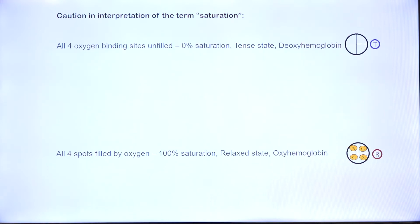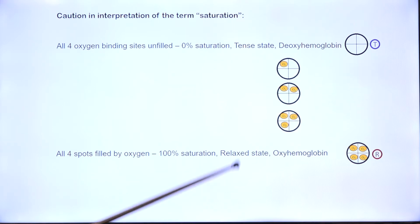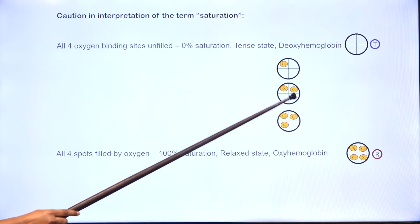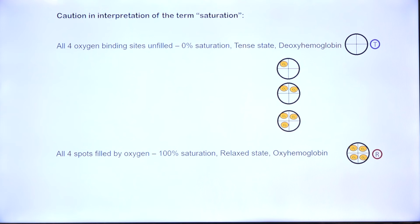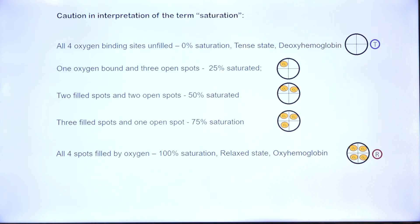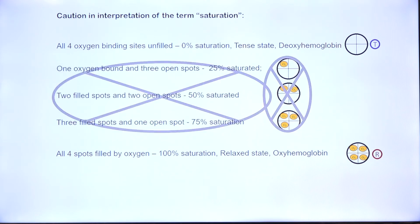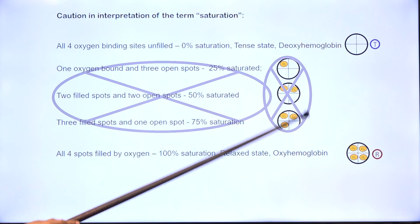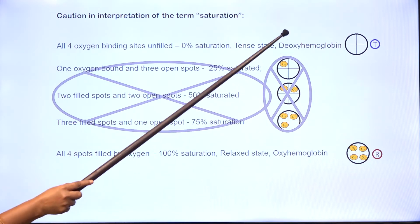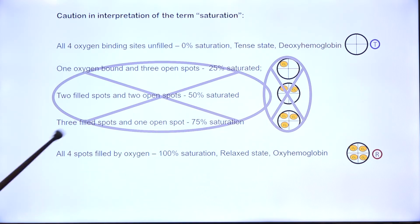Though some literature claims there can be intermediate forms with one, two, or three oxygen molecules bound to hemoglobin, that may not be correct. I would go by the concept that hemoglobin can only exist in two states: tense and relaxed.